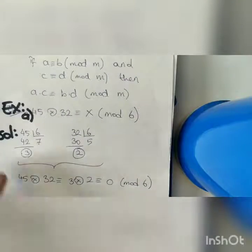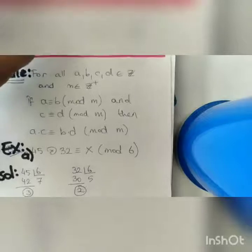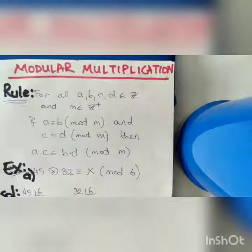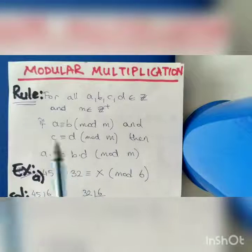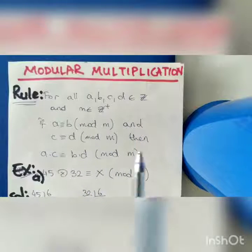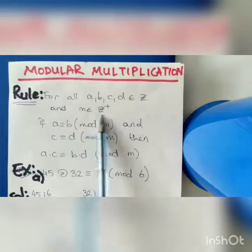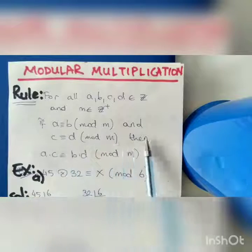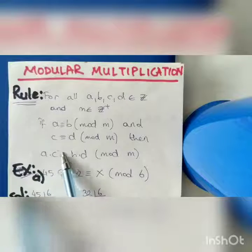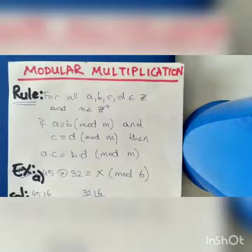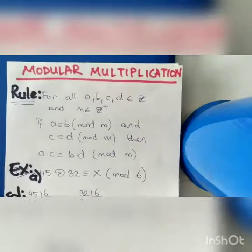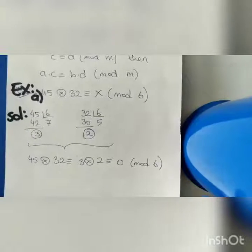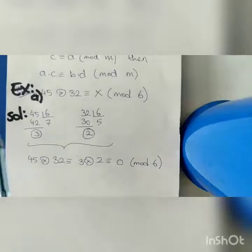Now we have modular multiplication, and we have another rule. For all four elements of integers and one element of positive integers: if a is equivalent to b modulo m and c is equivalent to d modulo m, then a multiplied by c will be equivalent to b multiplied by d modulo m. Let's solve one example using this rule.